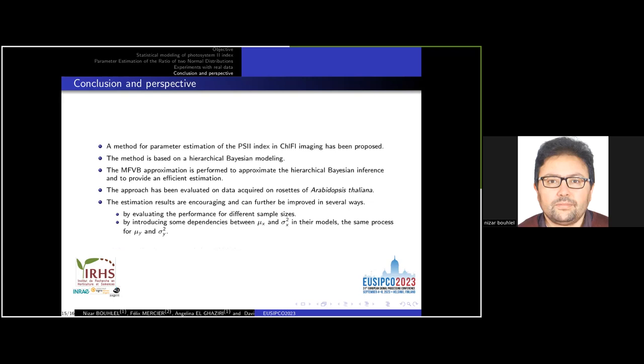In conclusion, in this study, a method for parameter estimation of PCI index in chlorophyll fluorescence imaging has been proposed. The method is based on hierarchical Bayesian modeling. The mean field variational Bayes approximation is performed to approximate the hierarchical Bayesian inference and to provide efficient estimation. The approach has been evaluated on data acquired on rosettes of Arabidopsis thaliana. The estimation results are encouraging and can further be improved in several ways. First, by evaluating the performance for different sample sizes. Second, by introducing some dependency between mu X and sigma X squared in their models. The same process can be applied for mu Y and sigma Y squared. We expect that this additional action will enhance the estimation performance.